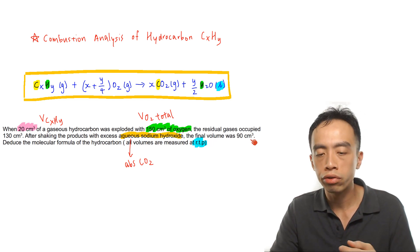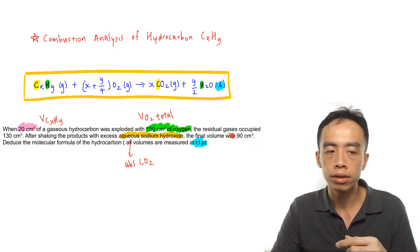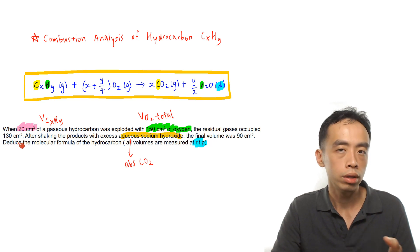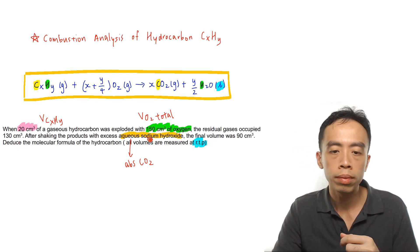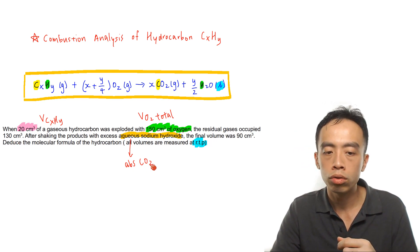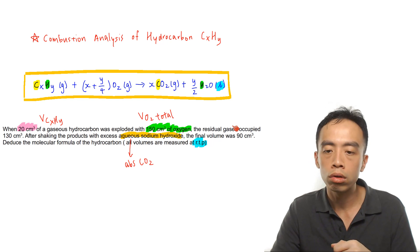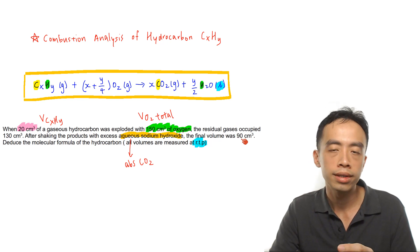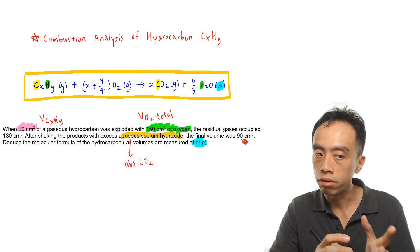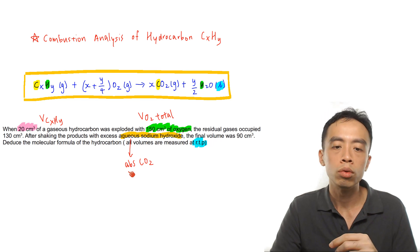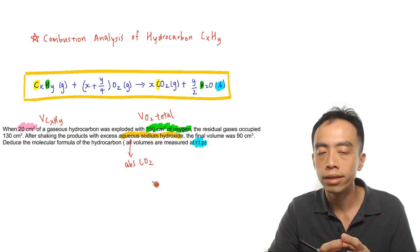After the reaction, the residual gases volume is 130 cm³. When passed through sodium hydroxide, CO₂ is absorbed and the final volume is 90 cm³. So the difference — 130 minus 90 — gives us the volume of carbon dioxide.